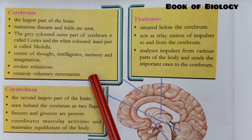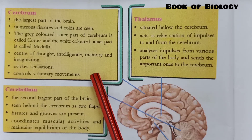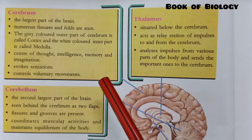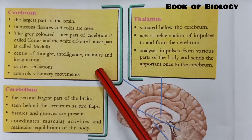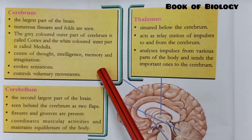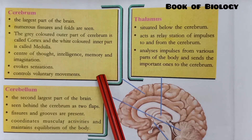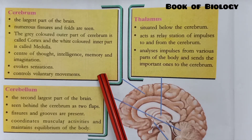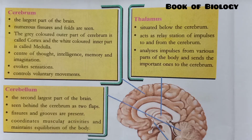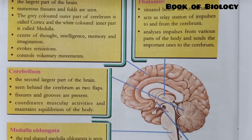The cerebrum also controls voluntary movements. You have studied two types of movements: voluntary and involuntary. Voluntary movements are those we consciously control, like moving the hand or moving the tongue. All these are controlled by the cerebrum.